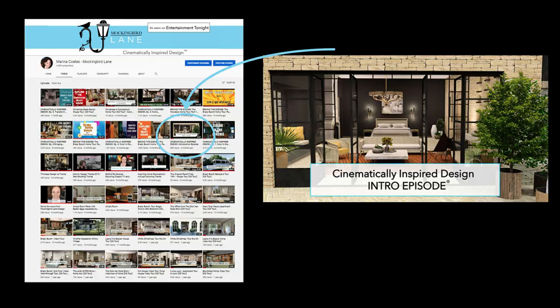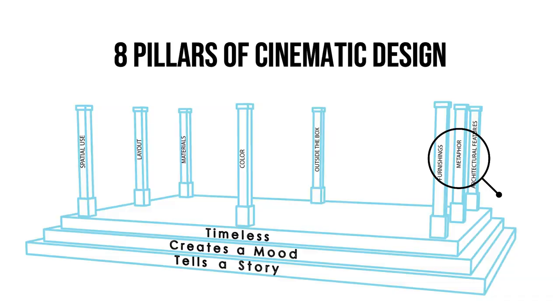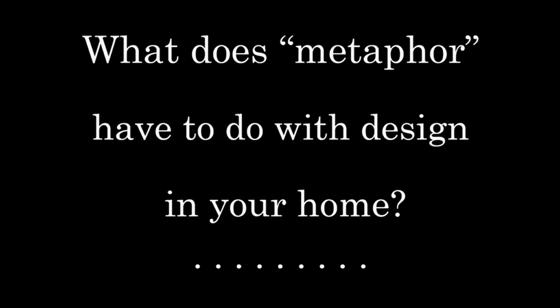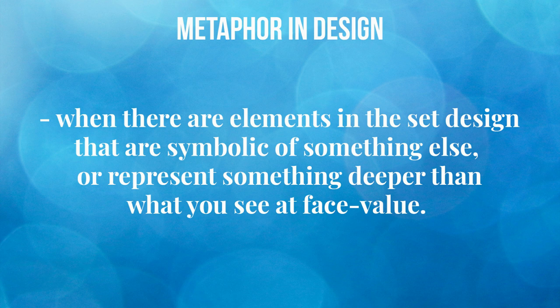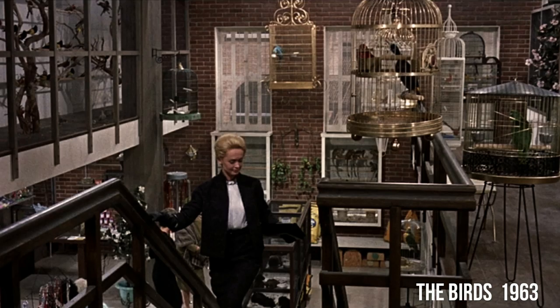Recently, a viewer watched my Cinematically Inspired Design introduction episode, where I lay out the eight pillars of design that we will be covering over the course of this series, and she noticed that one of the pillars was marked metaphor. She wanted to understand better what that means as it relates to design, and I thought you might too. To briefly sum it up, it's when there are elements in the set design that are symbolic of something else, or represent something deeper than what you see at face value. This adds to creating a mood and telling more of the story of the people that live there.